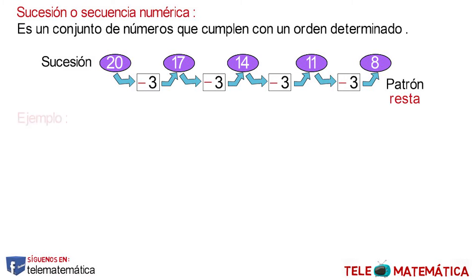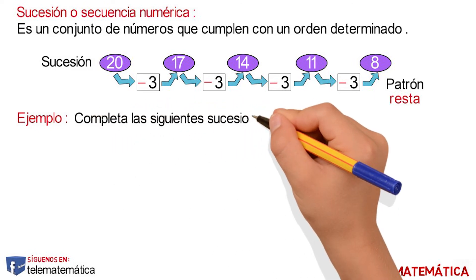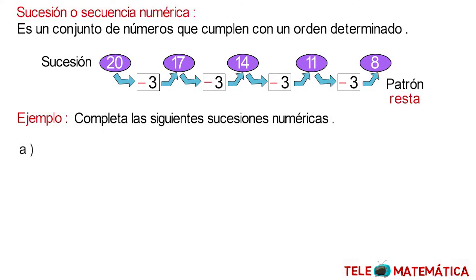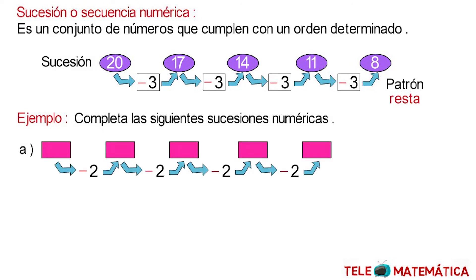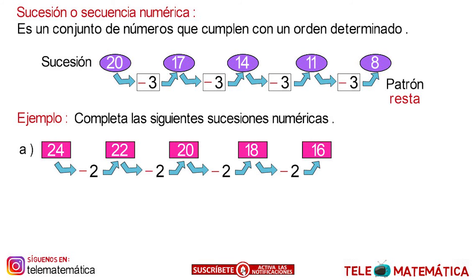Next, we will make some examples. Complete the following sequence — literal A: we have a succession where the pattern of subtraction is 2 and the sequence starts with 24. So: 24 minus 2 gives 22, minus 2 gives 20, minus 2 gives 18, minus 2 gives 16. And this would be the succession.